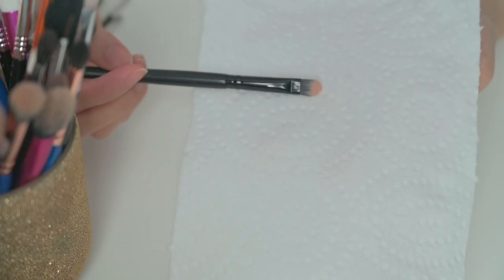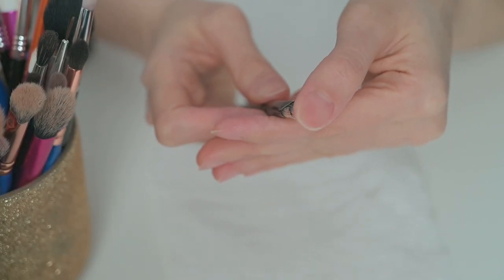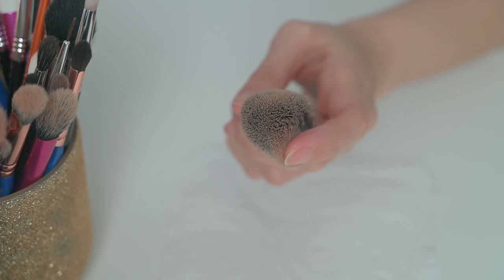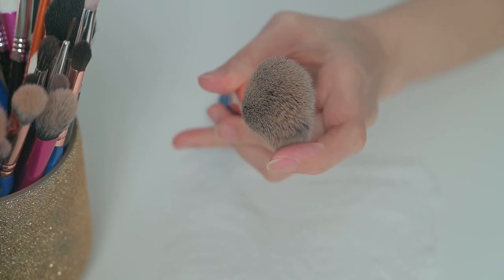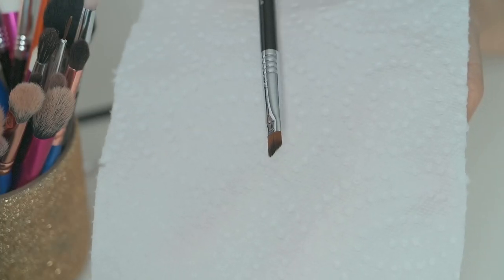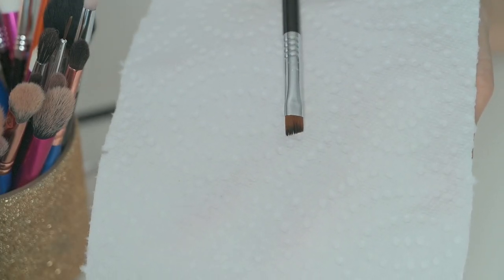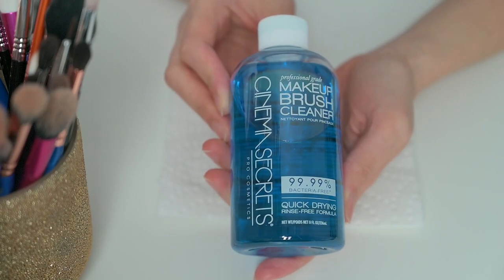Before I show you how I deep clean my brushes with soap and water, I want to talk about spot cleaning. I always do spot cleaning the brushes that are used to apply liquid, cream, or gel products right after using them as they tend to leave more residue on the brushes compared to powder products. I normally use the Cinema Secrets or the Next Brush Cleaner for this step.